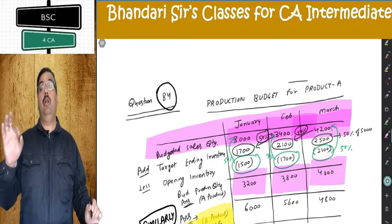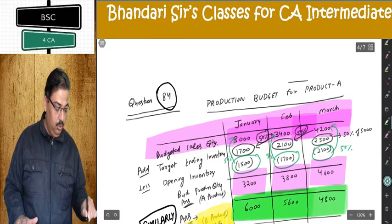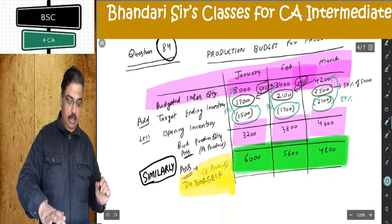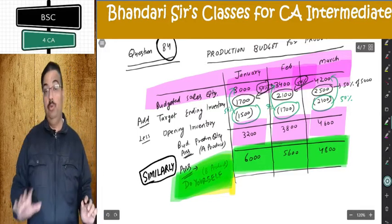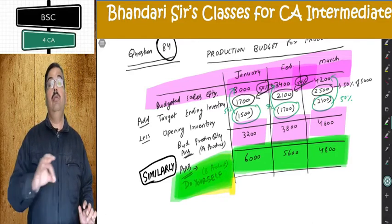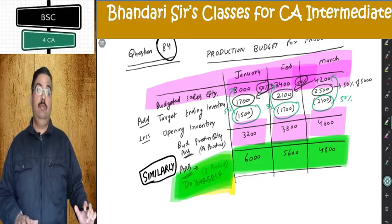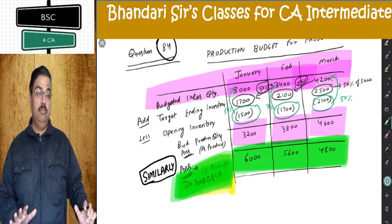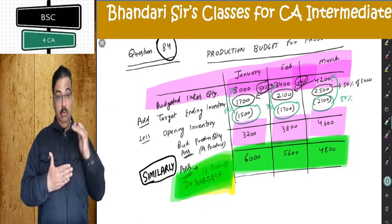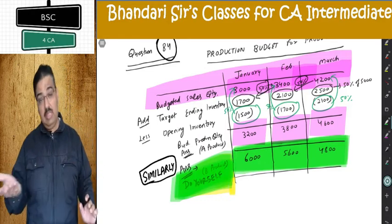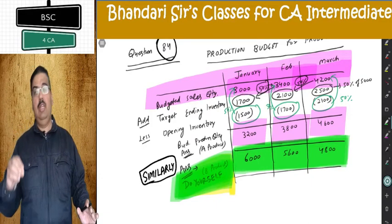Same way, make a table for product B. For product B you are getting 6,000, 5,600, and 4,800 — do it yourself. Only this part I am leaving for you, but you must do it and confirm these are the budgeted production quantity units for January, February, and March. Sale figures are going to change; stocks obviously depend on the sale.